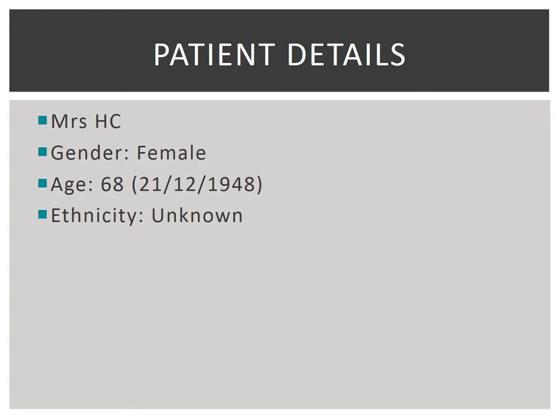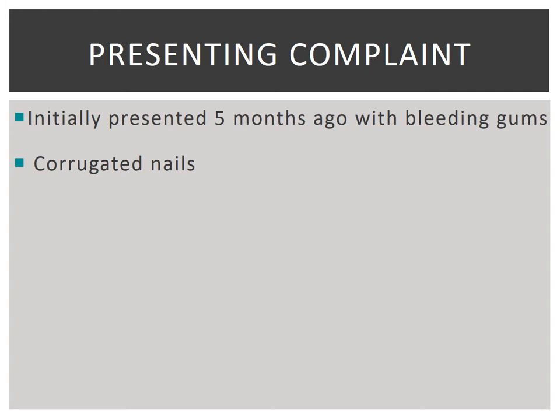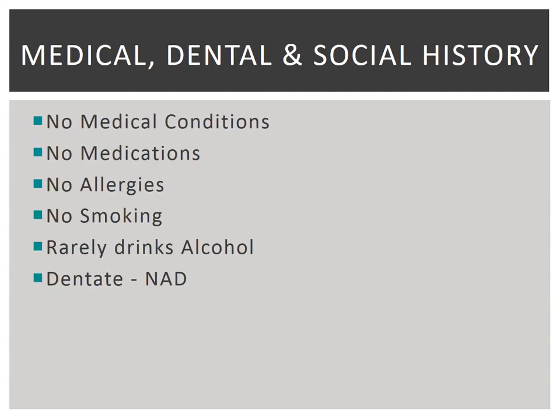Mrs. H.C. is a 68-year-old female patient of non-specific ethnicity. She presents with a white lesion, first noticed approximately 5 months ago, with bleeding only on the gums. Other complaints include corrugated nails, which she hasn't done anything for. Otherwise, Mrs. H.C. is fit and healthy. She has no relevant medical condition, is not taking any medications, and is not aware of any allergies. She does not smoke and consumes alcohol only on rare occasions.